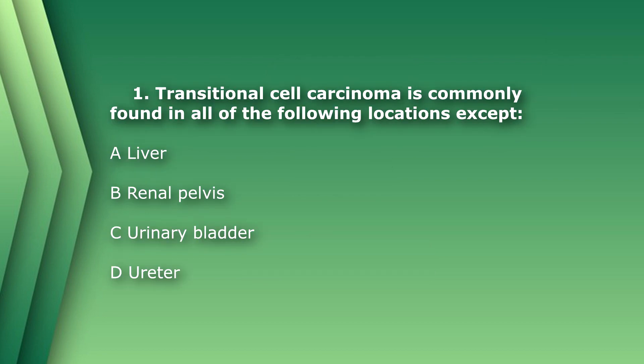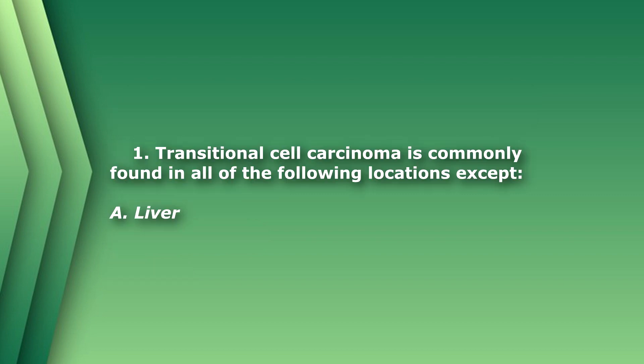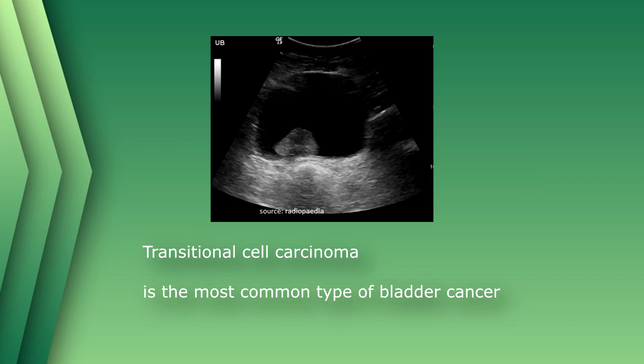Question 1: Transitional cell carcinoma is commonly found in all of the following locations except: A) liver, B) renal pelvis, C) urinary bladder, D) ureter. The answer is A) liver. Transitional cell carcinoma is the most common type of bladder cancer.